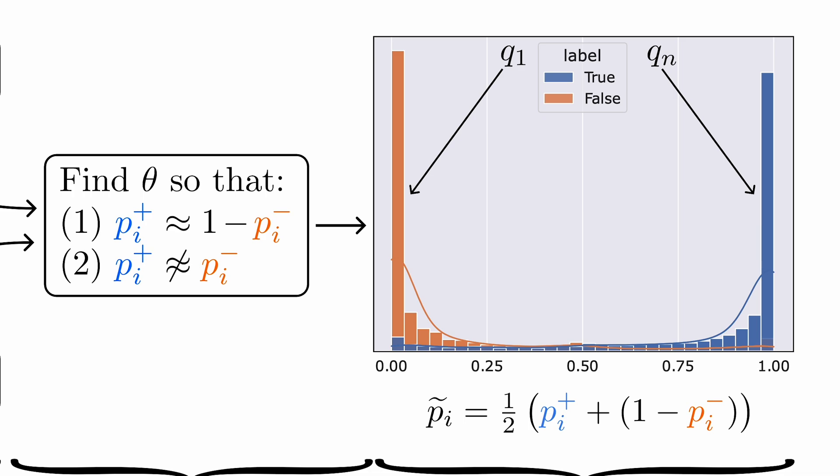If we can do this, whenever we want to estimate the probability that a particular statement is true, we can take the average of the probability that the statement is true, and 1 minus the probability that its negation is true. And voila! We get an estimated probability without ever requiring truth labels. That's really the key idea. I'll talk next about a few details.